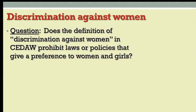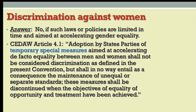This phrase 'discrimination against women' appears throughout the convention. Before turning to the scope of the convention in terms of the human rights that it protects, I want to raise one issue about this definition in the form of a question. Does the definition of discrimination against women in CEDAW prohibit laws or policies that give a preference to women and girls over men and boys? The answer in the convention appears in Article 4, and the answer is no, provided that such laws and policies are limited in time and seek to accelerate gender equality.